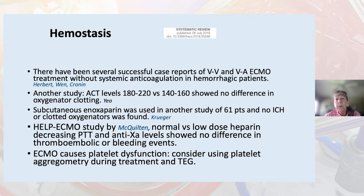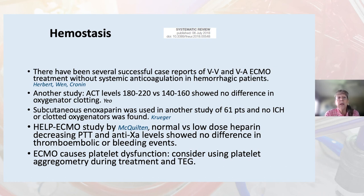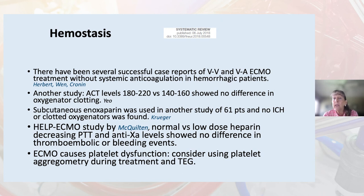There have been several successful case reports of VV and VA ECMO treatment without systemic anticoagulation in hemorrhagic patients. Other studies have looked at ACT levels at 180 to 220 versus 140 to 160 and reported no difference in oxygenator clotting. Subcutaneous enoxaparin was used in another study of 61 patients and no intracerebral hemorrhage or clotted oxygenators were found. In the HELP ECMO study, decreasing PTT and anti-Xa levels showed no difference in thromboembolic or bleeding events. ECMO causes platelet dysfunction, so it should be monitored, possibly using platelet aggregometry or TEG.